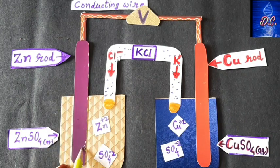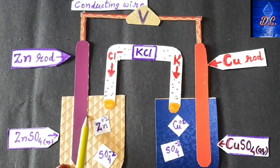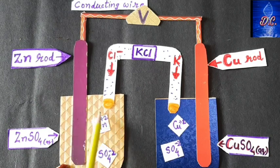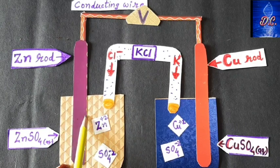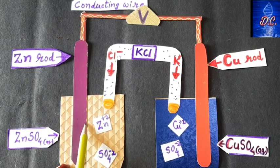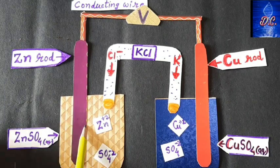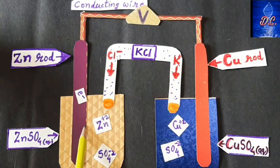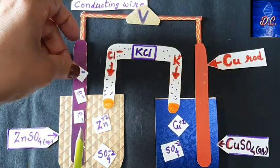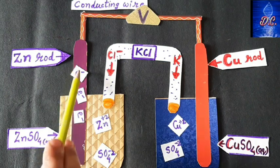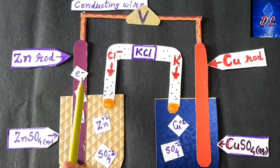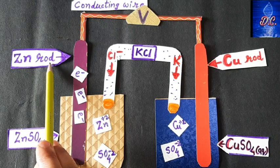When the zinc rod is dipped in the zinc sulphate solution, oxidation starts on the zinc rod. Due to oxidation, the zinc atoms lose electrons and enter the solution as zinc ions. Each zinc atom loses 2 electrons, which get deposited on the rod. As a result, the rod becomes electron-rich and negatively charged, so we consider the zinc rod as the anode.